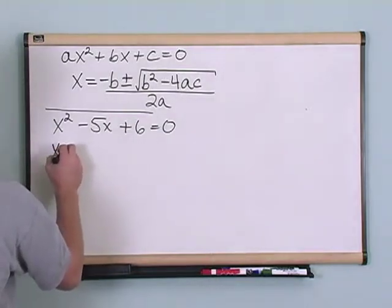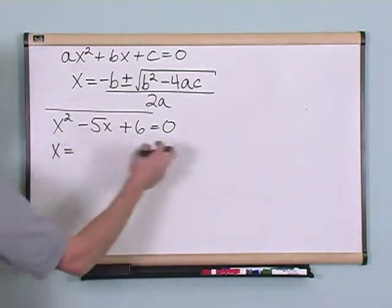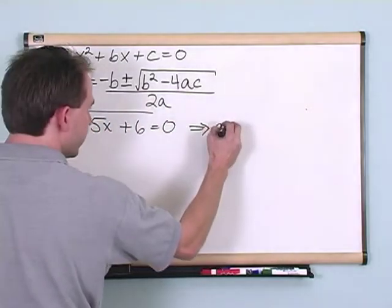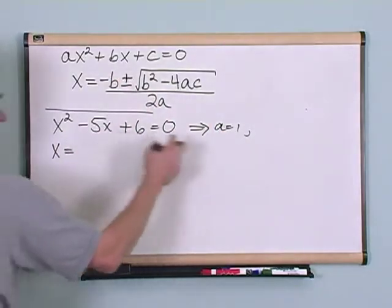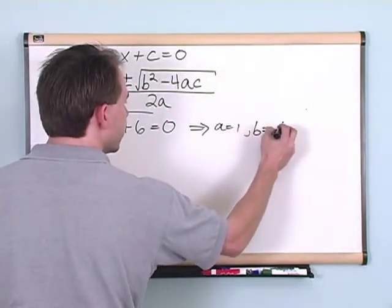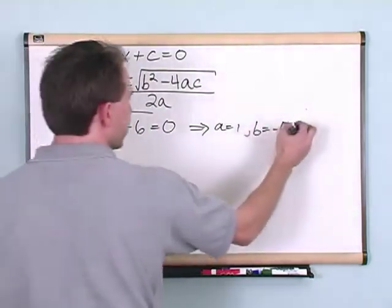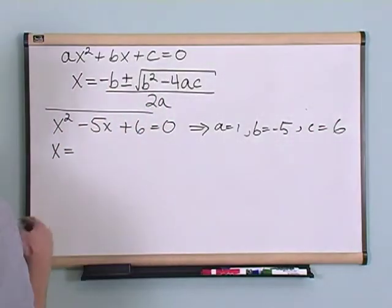x is equal to, let's just plug it in. Remember, in this case, a is whatever is in front of x squared, so a is equal to 1. b is whatever is in front of x, so b is equal to negative 5. And c is just whatever this constant is, which in this case is 6, and that's what I use in my formula.